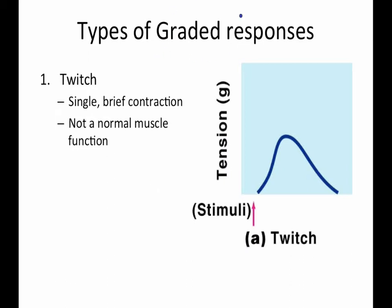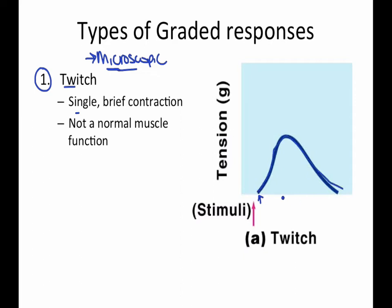The first type of graded response — and again, this is all microscopic — is a twitch. At a microscopic level, this is not the same thing as your leg twitching while sitting at your desk. A twitch is a single, brief contraction, but it's not a normal muscle function. You get a little contraction and then it relaxes.